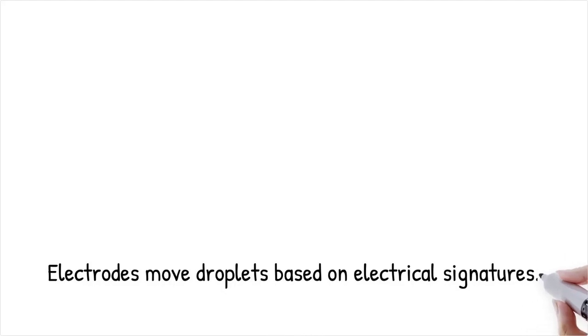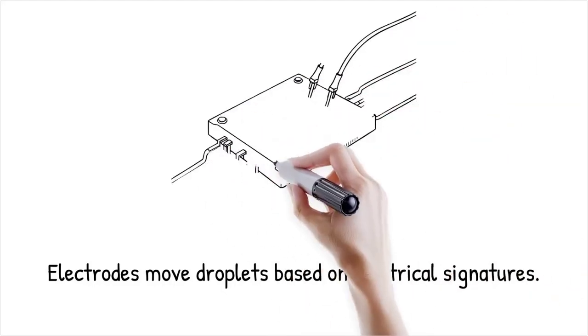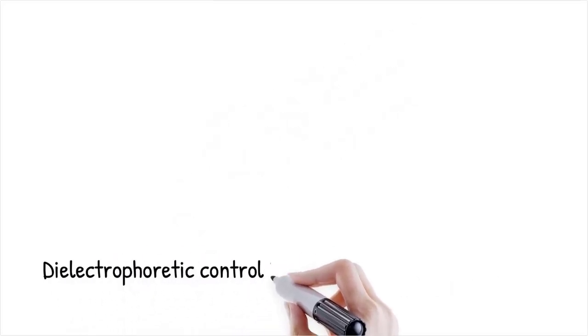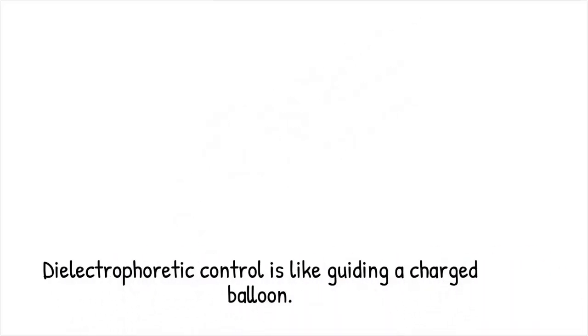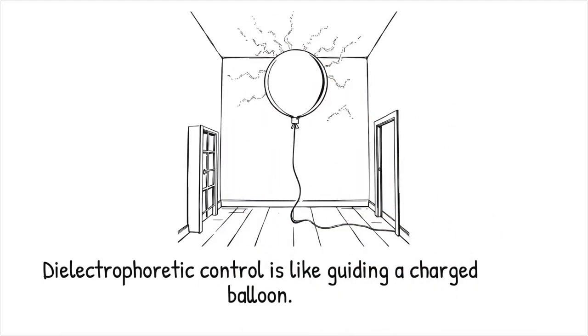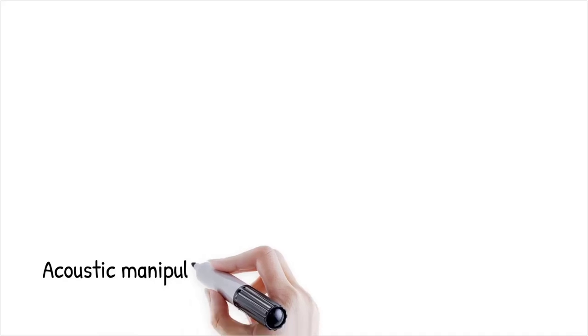Electrodes integrated into a microfluidic chip move droplets to designated zones based on their electrical signatures. Dielectrophoretic control is like guiding a charged balloon through a room using strategically placed static electricity sources.